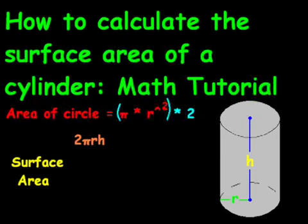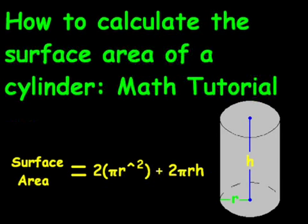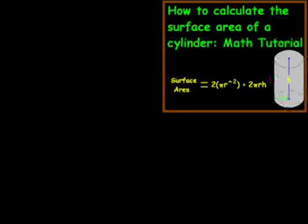And if we add those together, our surface area is going to equal 2 times parentheses πr² parentheses plus 2πrh. And that's our formula for surface area.